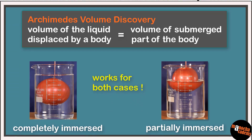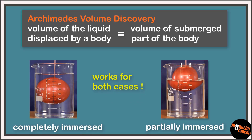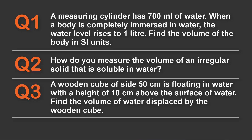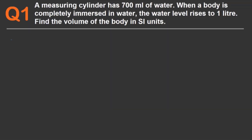As a recap, let me pull up the concept board from the video lesson. Here are the top three questions — let's go and solve them one by one. Question one: a measuring cylinder has 700 milliliters of water. When a body is completely immersed in water, the water level rises to one liter. Find the volume of the body in SI units.